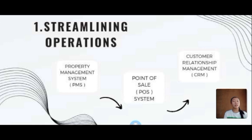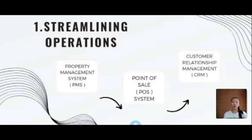The third streamlining operation is customer relationship management, or CRM. This involves processes that can enhance customer engagement, personalize guest experiences, and ultimately drive loyalty and revenue. By streamlining the operations of a CRM system in hospitality management, businesses can achieve a deeper understanding of their customers, deliver exceptional personalized experiences, and foster loyalty.